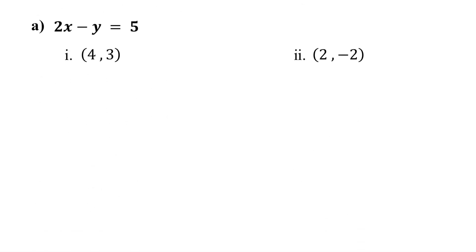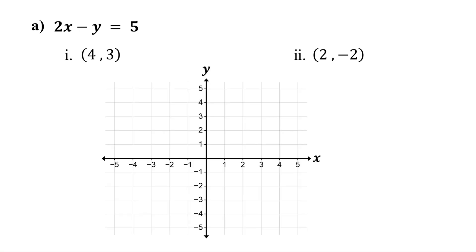A linear equation in two variables represents a line on the coordinate plane. For example, the equation 2x minus y equals 5 represents this line. In other words, the line is the graph of the equation 2x minus y equals 5.